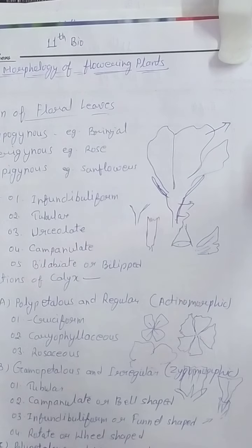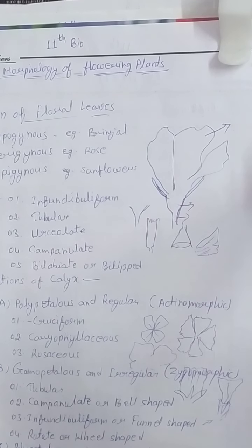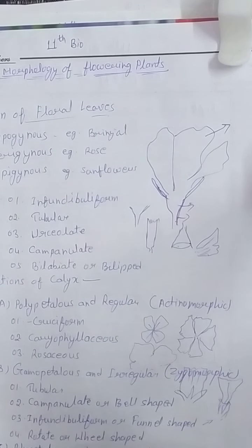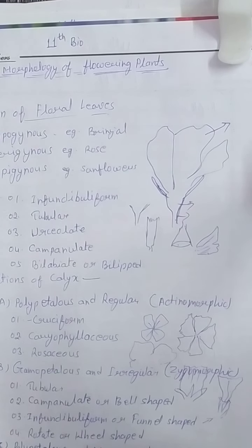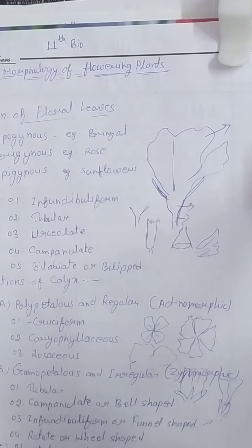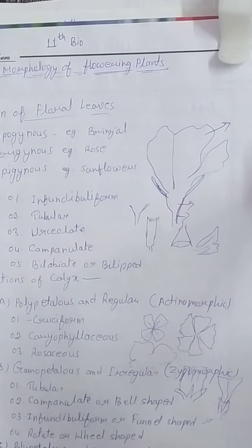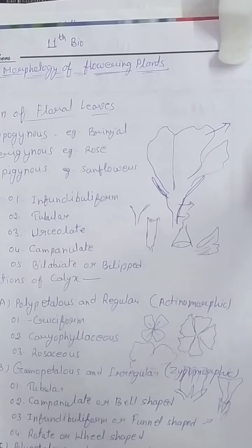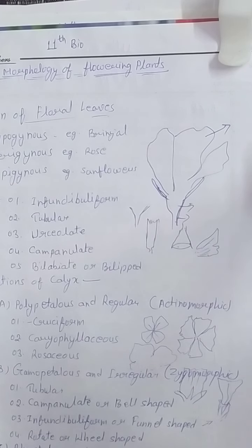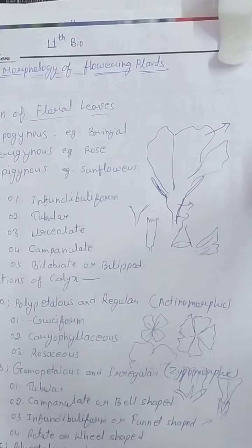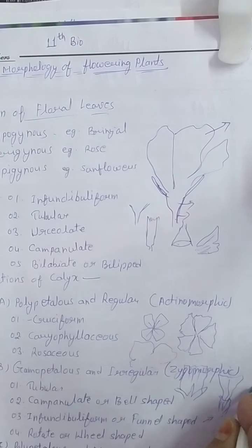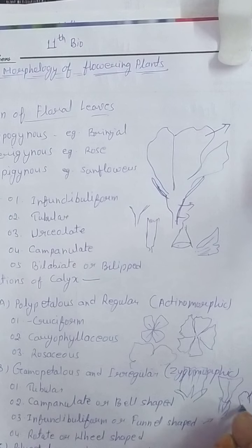Third is funnel-shaped and fourth is rotate or wheel-shaped — when the tube of the corolla is narrow and the entire corolla is more or less wheel-like in appearance, as in jasmine. In this type, the corolla forms a wheel-like structure.